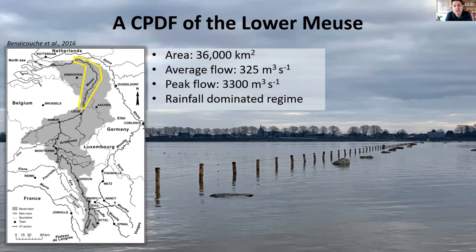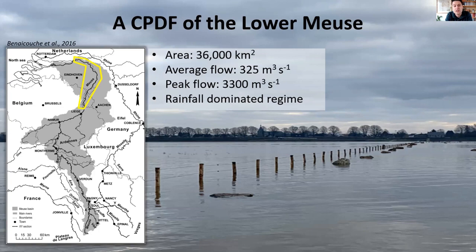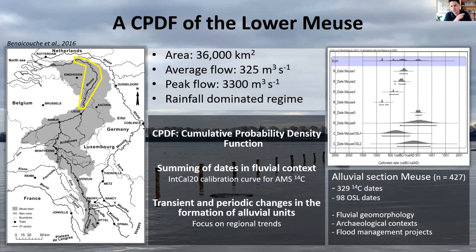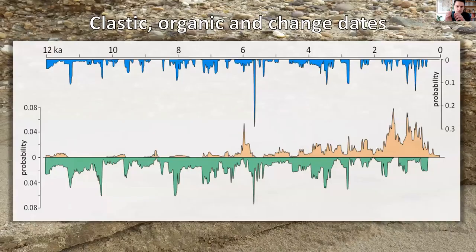We looked at the lower Meuse reach in the Netherlands and constructed a CPDF — a cumulative probability density function — which is a summation of all dates taken in a fluvial context. Every dated fluvial unit was gathered from literature on fluvial geomorphology, archaeological research, and recent flood management projects. All ages and their uncertainty ranges were added into a single summation, giving a distribution of dates through time that shows transient and periodic changes in the formation of alluvial units. The focus is on Holocene trends over the last 12,000 years. We have about 427 dates in total.